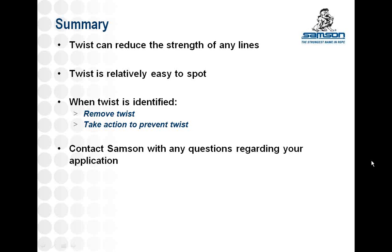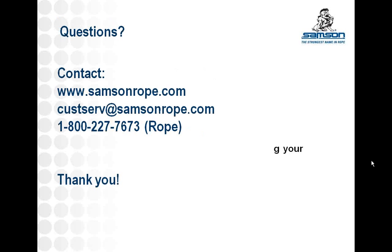In summary, we looked at twist in lines and showed how twist can reduce the strength of a line — the more twist, the lower the strength. Fortunately, twist is relatively easy to spot, so we looked at how it can be identified and what to do when you do identify it. It's important to remove the twist before continuing to use the lines and take action to prevent it from recurring. If you have any questions, please contact Samson — we'll be able to answer your specific questions regarding twist in your application. Thank you very much for attending this webinar, and we look forward to seeing you at the next Samson Quarterly.